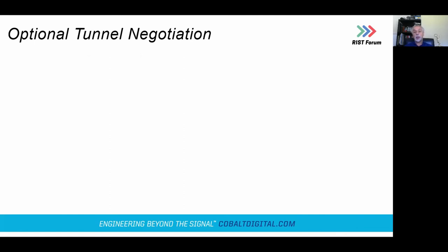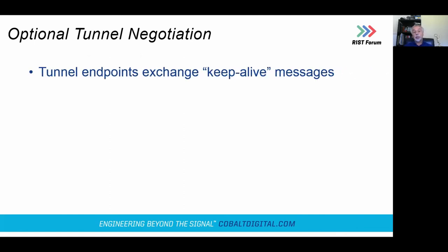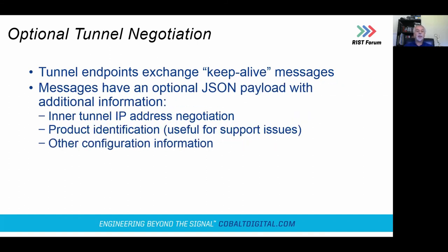There's optional tunnel negotiation. The tunnel endpoint sends keep-alive messages to maintain the connection, and those keep-alive messages have an optional JSON payload with additional information. This can be used for inner IP address negotiation, product identification so you know what device is on the other side — useful for support issues — and other configuration. Since it's JSON and text-based, it's extendable, so if vendors need additional information, they can add it to that message in a compatible manner.